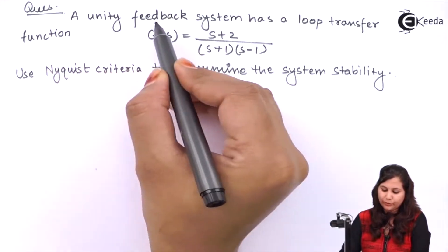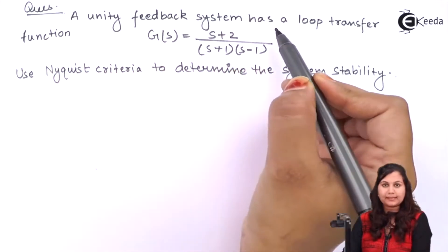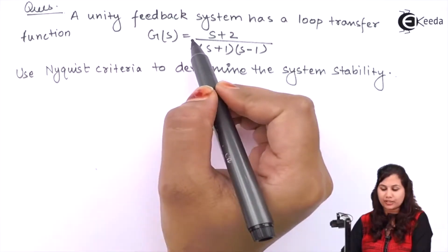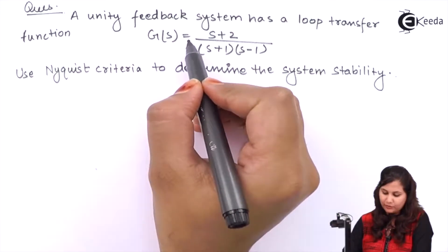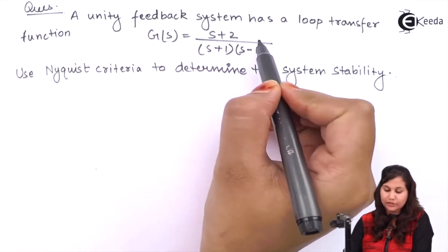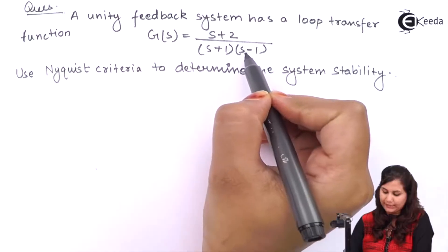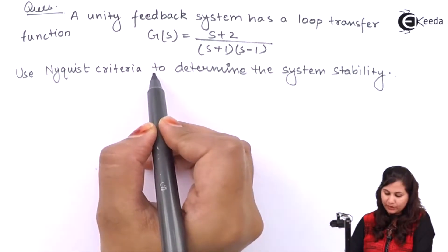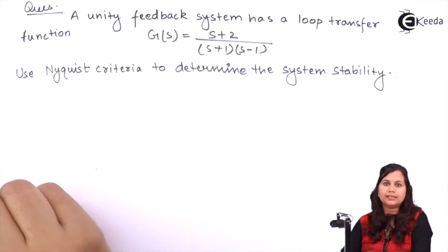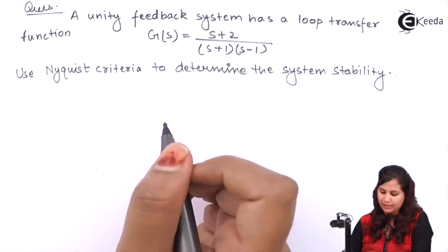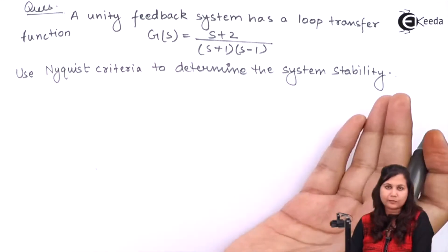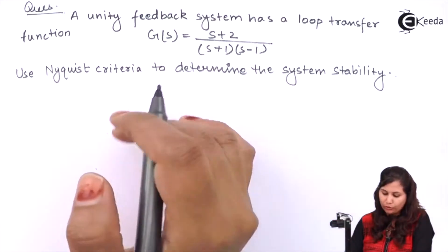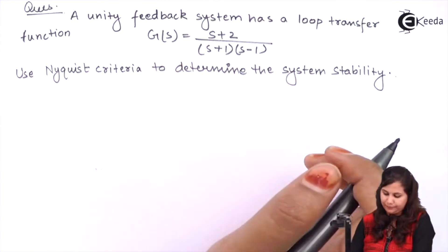Our problem is: a unity feedback system has a loop transfer function given as G(s) = (s+2) / ((s+1)(s-1)), and using the Nyquist criteria we have to determine the system stability — that is, whether the open loop or closed loop system is overall stable.